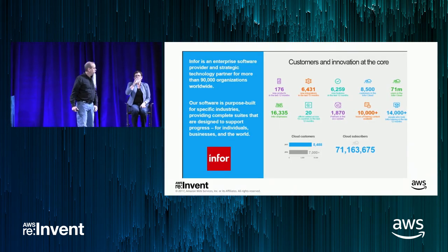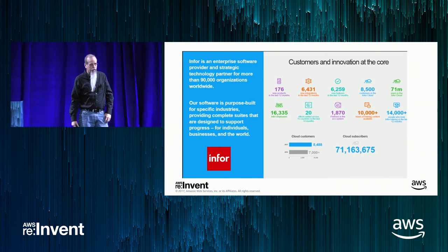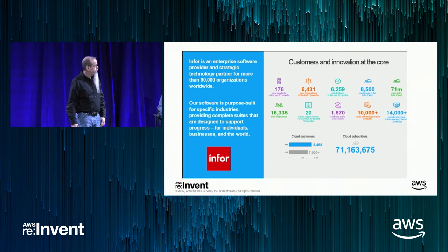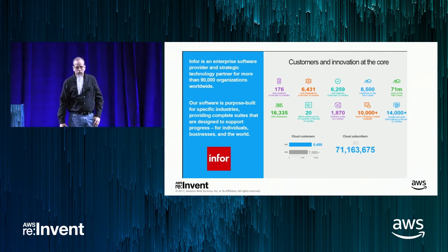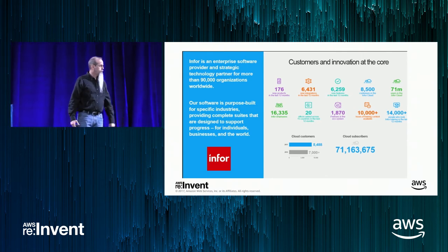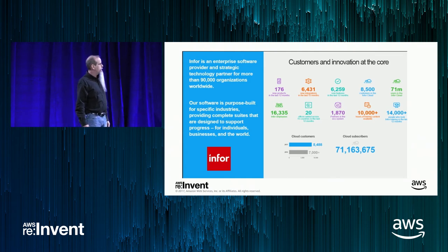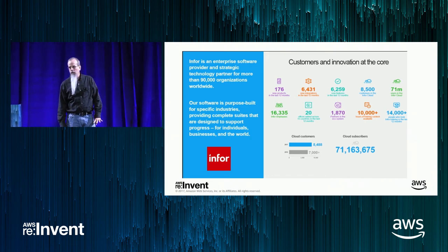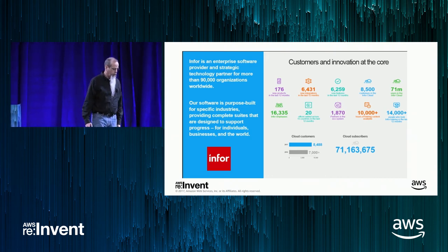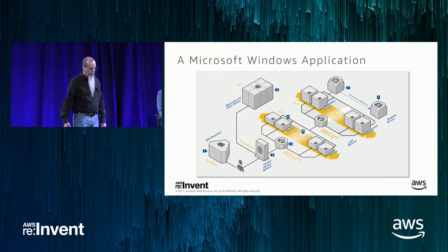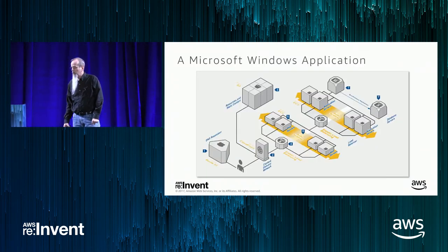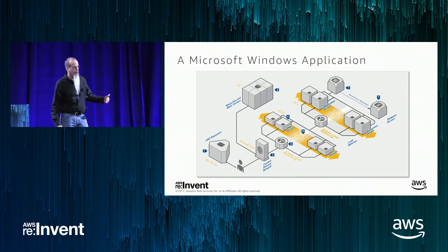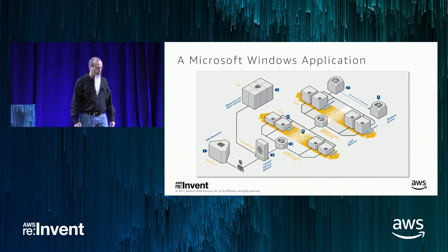I'm Richard Sharp with Infor Software. We're an enterprise software provider and technology partner for more than 90,000 organizations worldwide, with 16,000 people scattered around the world writing software and solving enterprise-grade problems. I actually run the database tier in Infor Public Cloud and want to talk about what we found after we started working with some of these options Jill has been discussing.